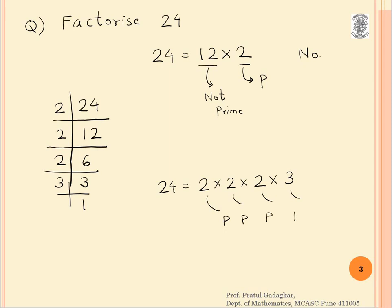I will do the factorization until I get all prime numbers. The factorization 24 = 12 × 2 is not a correct complete factorization because 12 was not a prime number.